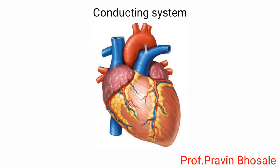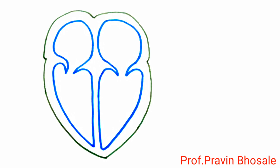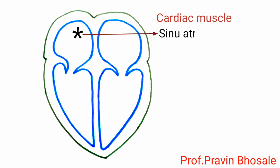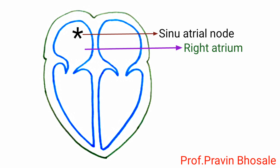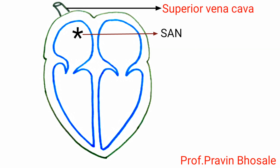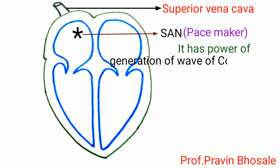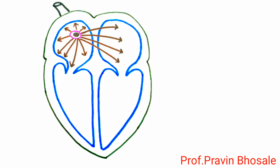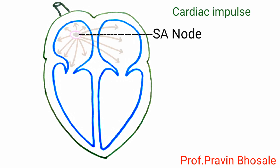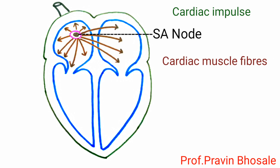Regarding the conducting system: the human heart is myogenic. The heartbeat originates in modified cardiac muscles called the sino-atrial (SA) node, which lies in the wall of the right atrium near the opening of the superior vena cava. The SA node is called the pacemaker because it initiates the wave of contraction.